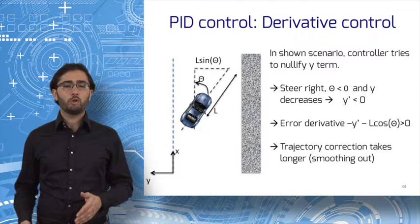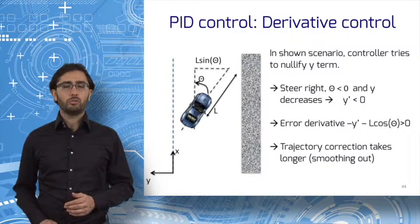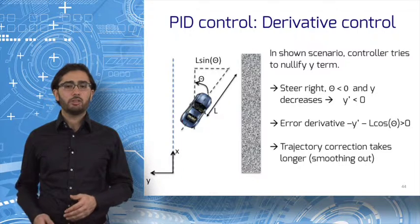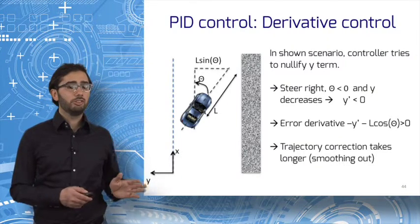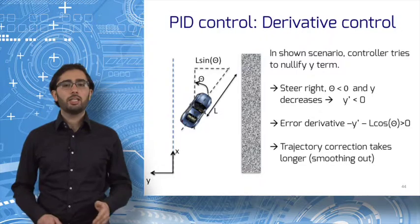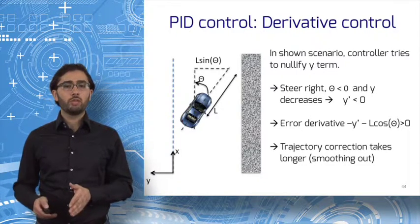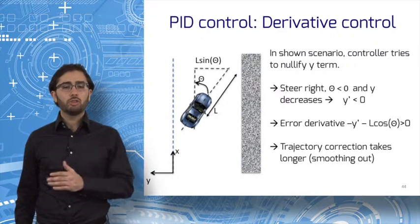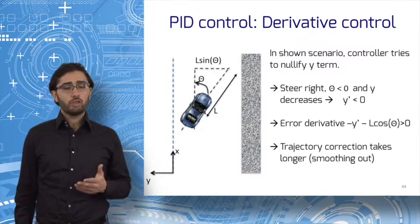The error derivative term, minus y prime minus l cosine theta, is therefore positive. Steer left. The effect of these two conflicting commands is to smoothen out the correction. It takes longer to come back to center, and the trajectory is smoother.